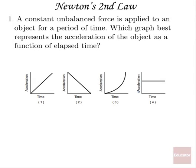Starting with number one, we have a constant unbalanced force. That means we have a net force equal to some constant value, not zero. It does exist, and it's applied to an object for a period of time. Which graph best represents the acceleration of the object as a function of time?